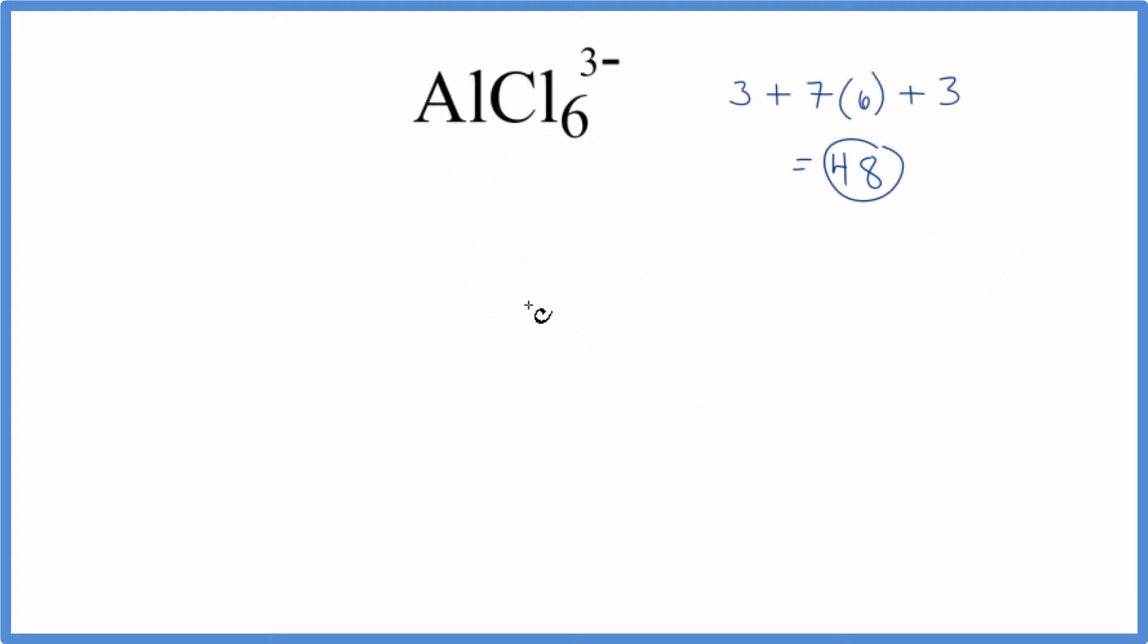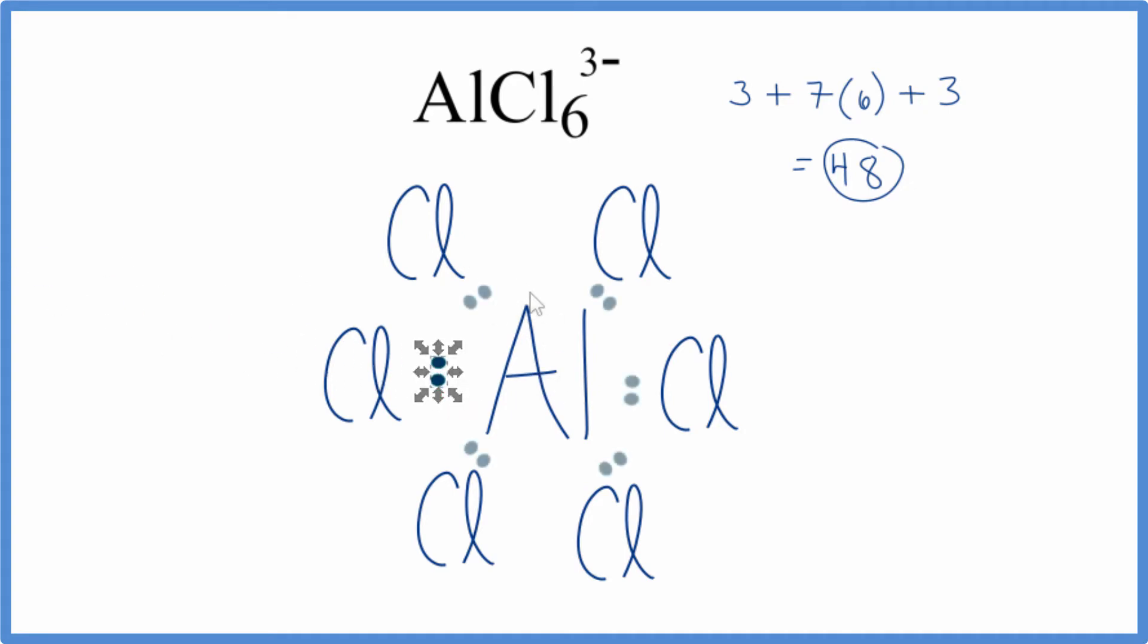We'll put aluminum at the center of our Lewis structure, it's the least electronegative element. Then we'll put chlorine atoms around the outside. Next, we'll put a pair of electrons between each chlorine and the aluminum here. That'll form the chemical bonds. So far, we've used 12 electrons.